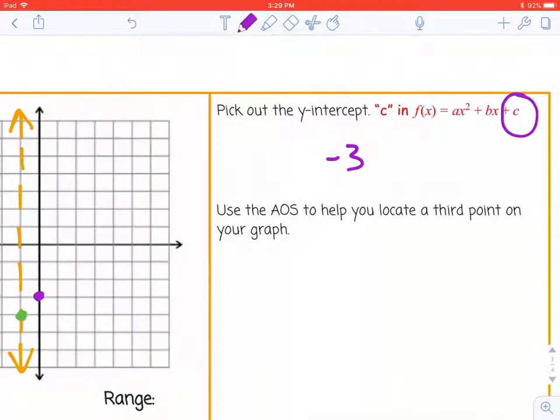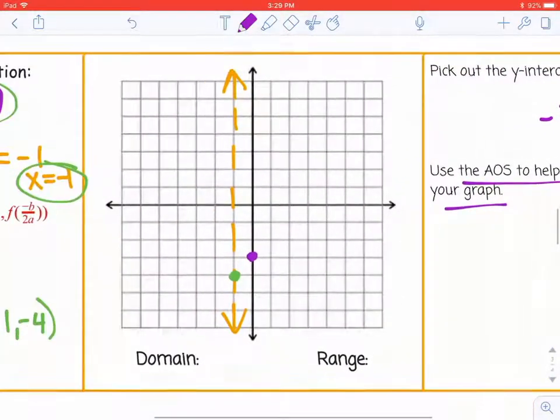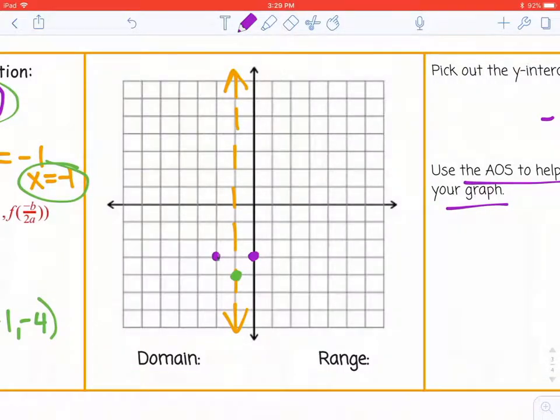Use the axis of symmetry to help you locate a third point on your graph. That helps me notice there's a mirror image point on the other side of that imaginary line.